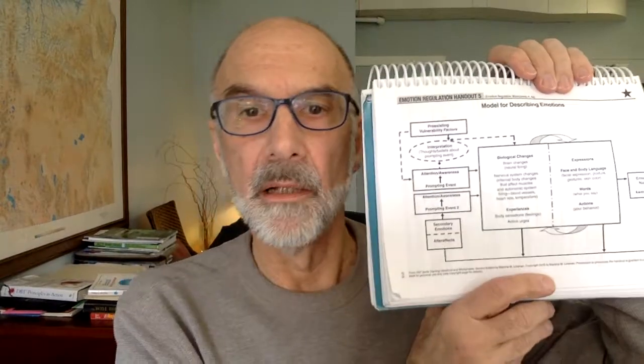We're continuing with the model for describing emotions, handout number five. I was just starting to say in the last video: what is it that makes it so complicated to teach? It isn't only that there's all the boxes and the flowchart and some people's brains don't work this way. Plus, there's a lot of information there, lots of different components.